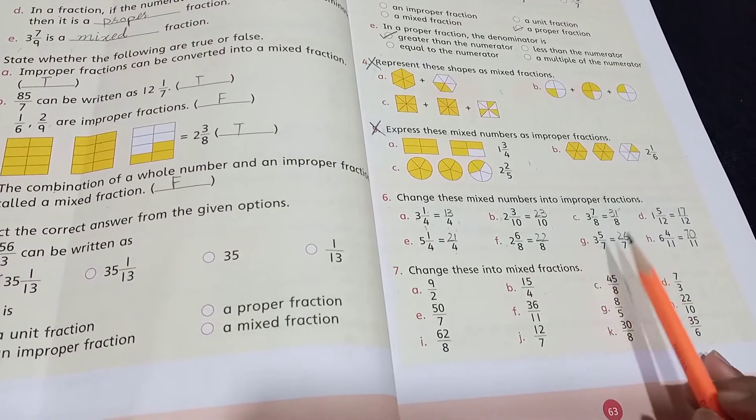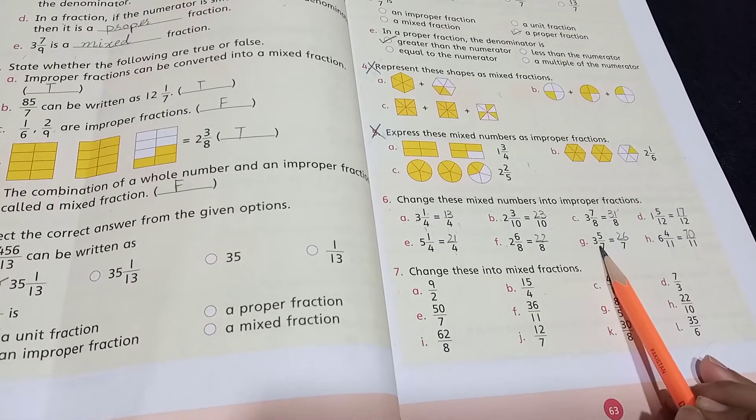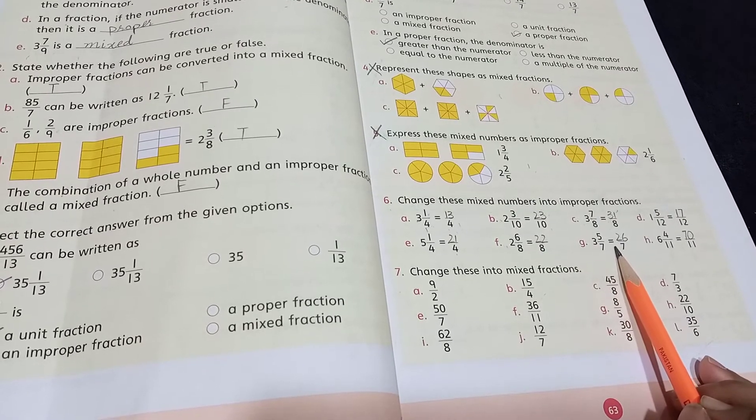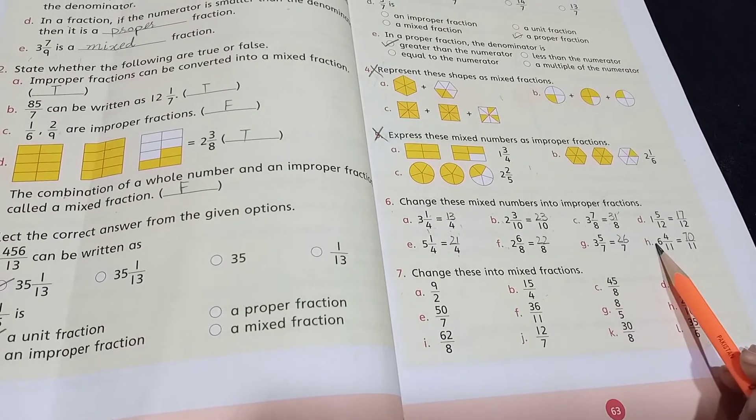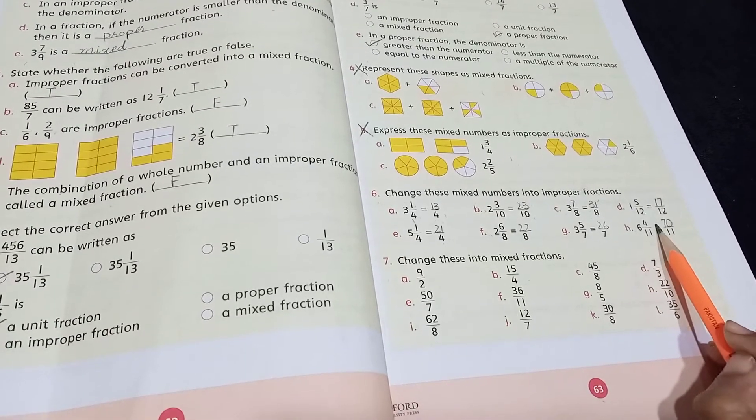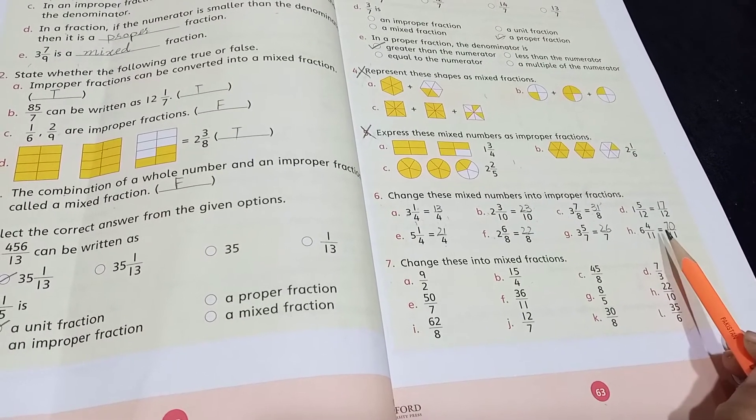And then 7 times 3 are 21. 21 plus 5, so the answer will be 26 by 7. 11 times 6 is 66. 66 plus 4, so the answer will be 70 by 11.